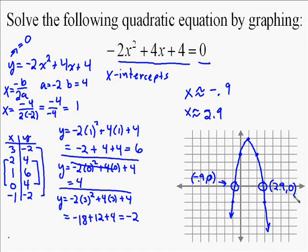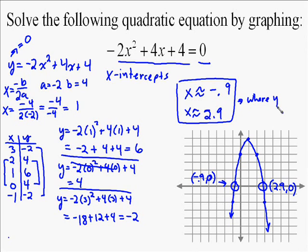So in this case, if you were to use a quadratic formula or another method, you'd probably get an exact answer, but it would be very close to negative 0.9 and very close to 2.9. And this can be very valuable if you use a calculator to check your answer and see if they're right.